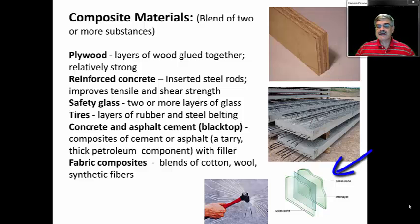Safety glass is another composite material which involves two or more layers of glass, some type of glue or film or polymer in between the layers. Tires are composites, layers of rubber and steel belting. Concrete and asphalt cement, or what we call blacktop, are composites of cement or asphalt. Asphalt being that tarry substance that is a component of petroleum, very thick, heavy component, mixed with some filler material.